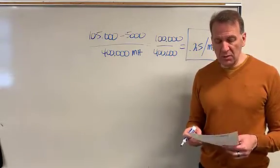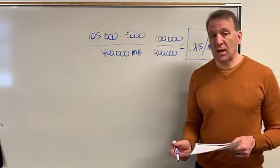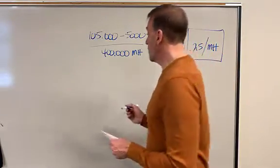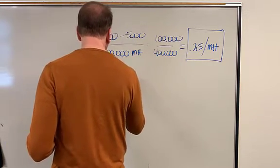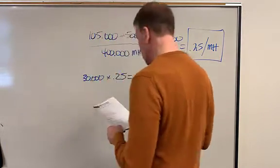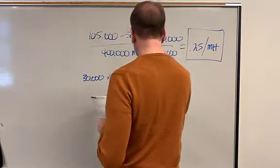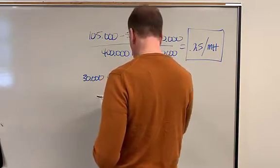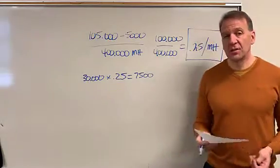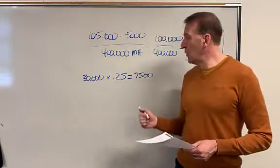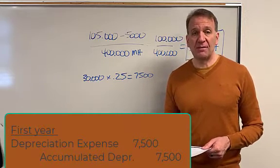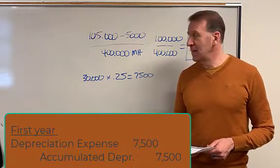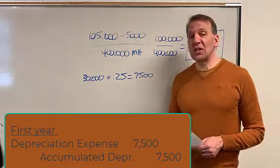Let's say in year one we use the machine 30,000 hours. So if we used it 30,000 hours, we're going to take 30,000 times the rate, 25 cents per hour, which gets us $7,500. In the first year we would depreciate this $7,500. We would debit depreciation expense $7,500, credit accumulated depreciation $7,500.